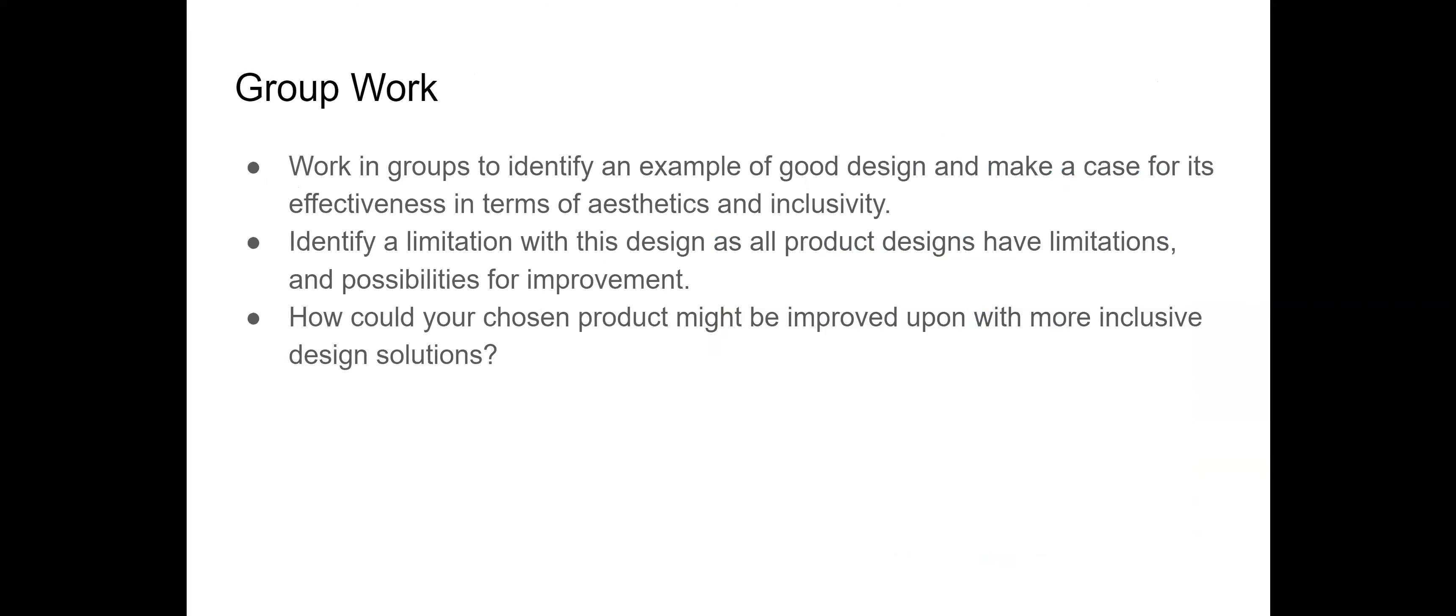So once I've given this example, then I have my students work in groups and I have them identify an example of good design, a current example, and make the case for its effectiveness in terms of aesthetics and inclusivity. And as Mara was saying, we all know that no design is perfect. There are always limitations. So I have them flag some of those limitations. And then also come up with some possible improvements. And I asked them to go back over this seven step framework and see especially how they could make their design more inclusive. And Mara, you've used this with your class as well. Do you want to add anything?